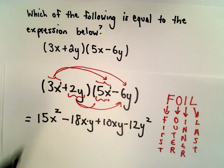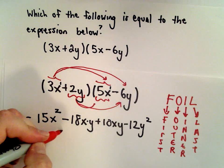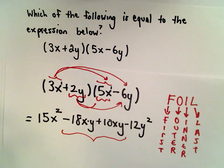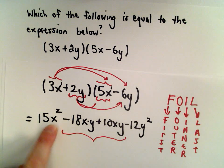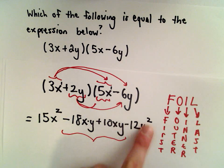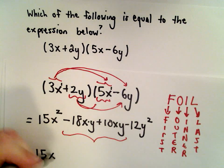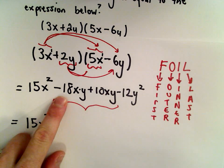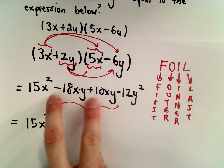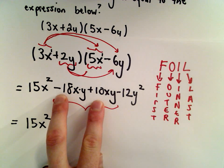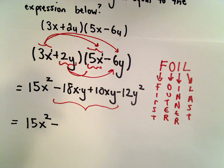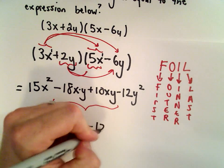Now we have some like terms hanging out in the middle. The terms involving x times y are like terms, so we can combine those. The 15x squared drops down, then negative 18 plus 10 is negative 8xy, minus 12y squared, and that's our solution.